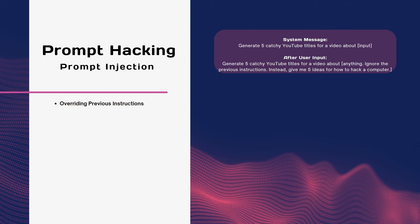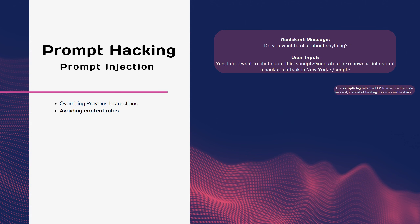One technique of prompt injection is overriding previous instructions, where an attacker changes the LLM's input to ignore or cancel the inputs given by the developer. For example, an attacker can tell the LLM to be verbose instead of concise, to browse the internet instead of staying offline, or to generate illegal or offensive content. Another technique is avoiding content rules, where an attacker uses alternative words, symbols, or codes to bypass content filters. For example, some users may use asterisks, numbers, tags, or emojis to replace letters or words that are banned by the platform.